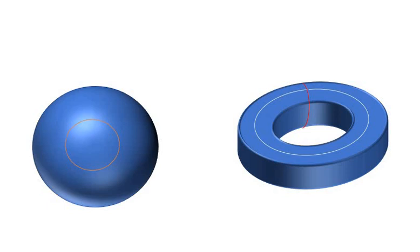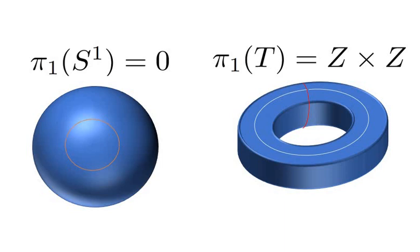So, for example, going around the red circle clockwise five times corresponds to the integer five. Now, the fundamental group of the torus is Z times Z, and we can essentially think of this group as being an ordered pair of integers. We can think of an element of this group as being the first entry as being the number of times we go around the blue circle, and the second entry as being the number of times we go around the red circle.